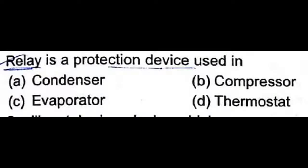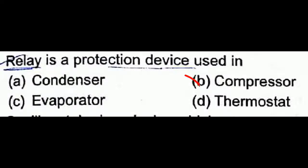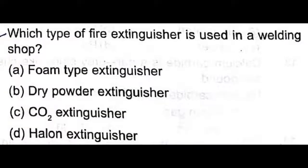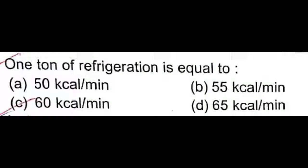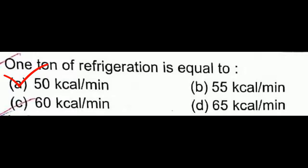The composition of soft solder is lead and tin — option A is correct. Remember this. A relay is a protection device used to protect the compressor from overheating and overcurrent — option B is correct. A carbon dioxide (CO2) extinguisher is used in a welding shop — don't be confused, it is the CO2 extinguisher.